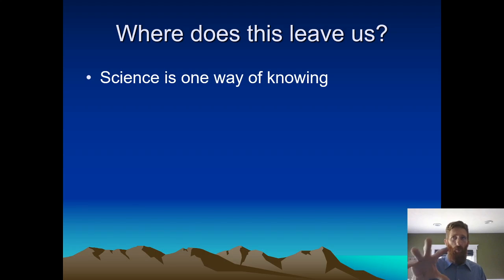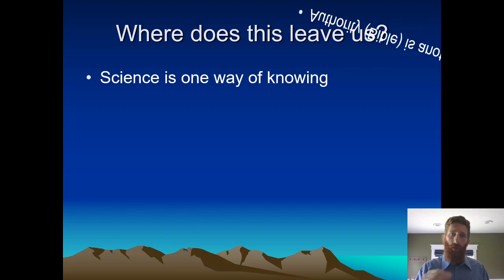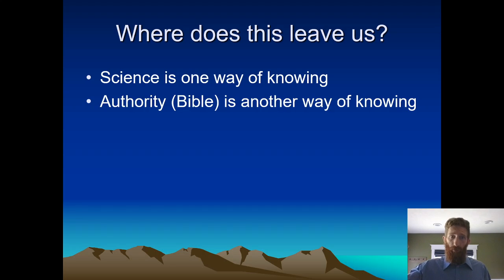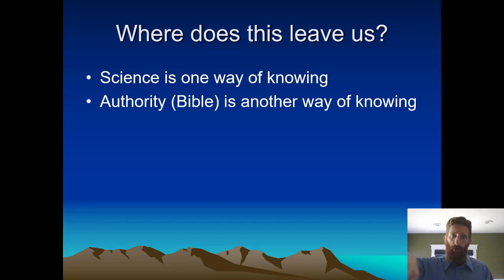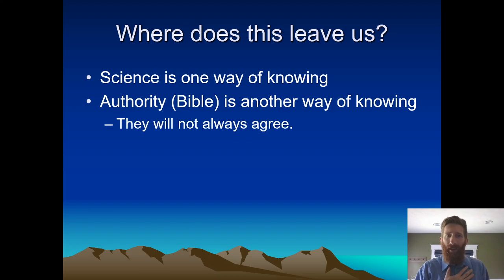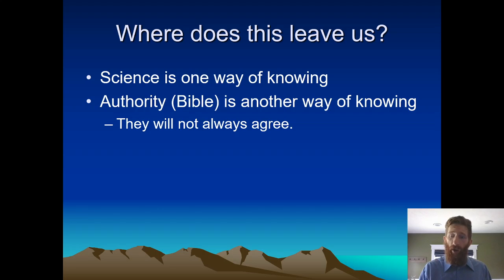Epistemology is how do you know what is true. You could just look to science and say we're a random assemblage of chemicals and life has no meaning and morality is determined by what's good for the whole entire group. Or you can look and say, no, we're made in the image and likeness of God and we have dignity and value and worth because of that. Our purpose for being here on this earth is to bring honor and glory to God. So kind of where I end up is: I know there are two different ways of knowing. Science excludes the supernatural. Authority of the Bible includes the supernatural. So I know they're not always going to agree, and I'm good with that. I'm okay with that tension.